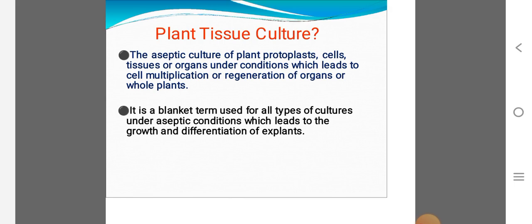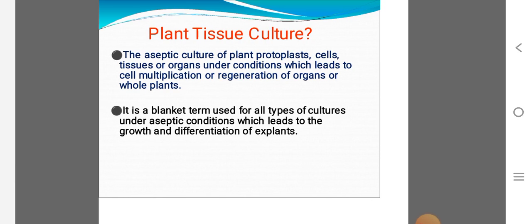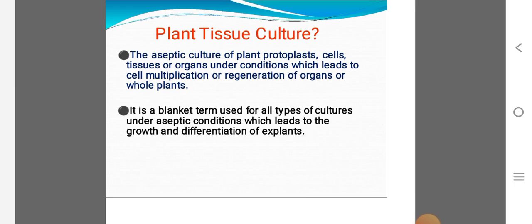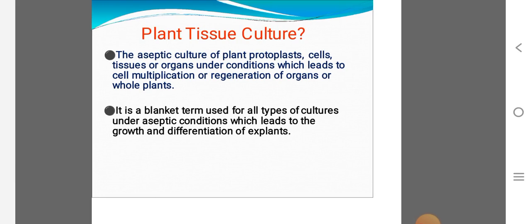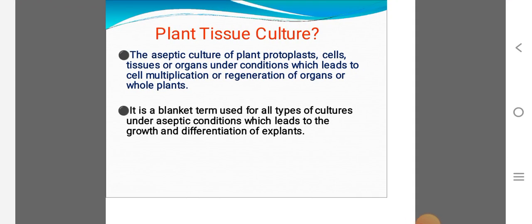In this culture having plant protoplast, here protoplast means cell minus cell wall, they are called naked cells. So cells, here plant cells, tissues, plant tissues and organs, here embryo culture, organogenesis, and then we are using callus inductions under conditions which leads to cell multiplication.